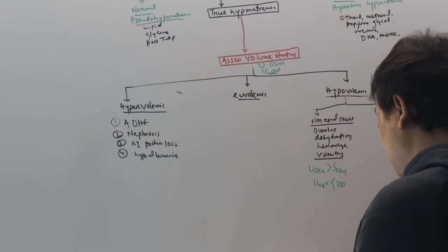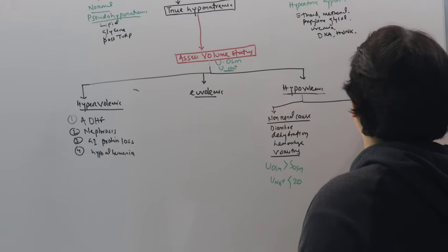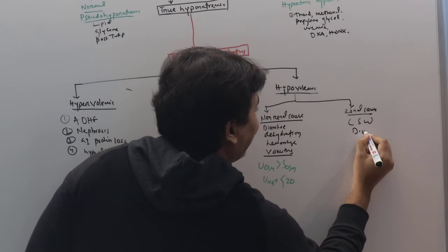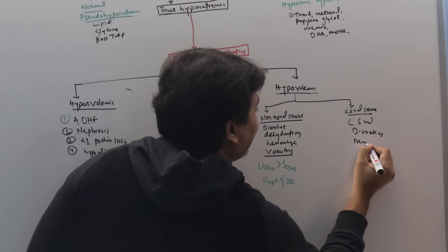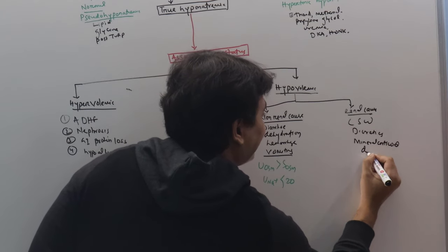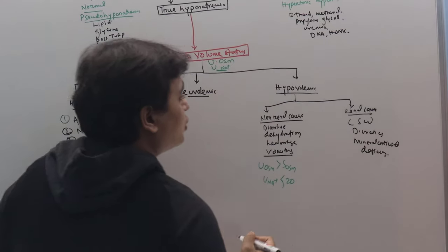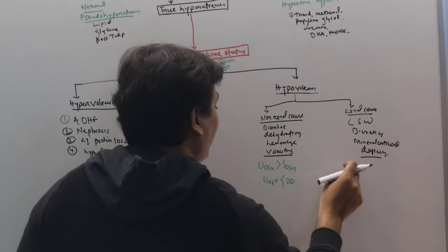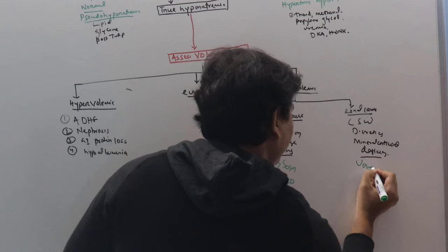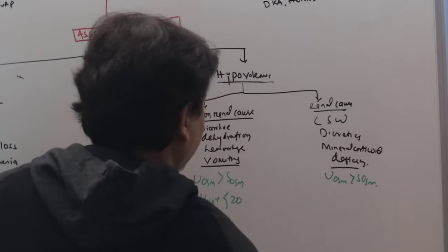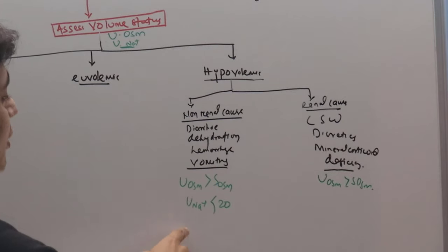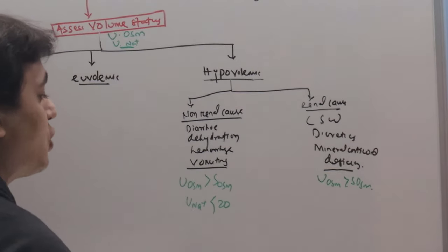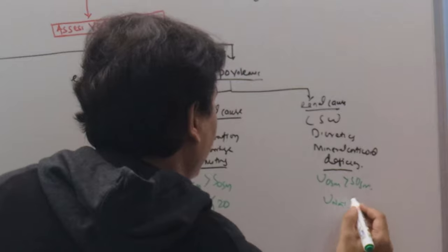If the cause of hypovolemia is renal — such as cerebral salt wasting, diuretics, or mineralocorticoid deficiency — the AVP system is still functioning, so urine osmolality remains greater than serum osmolality. However, because the renal sodium-retaining system is impaired, urine sodium will be more than 40 mEq/L.